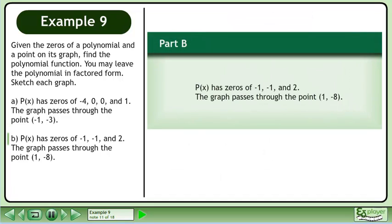Now we'll move on to part b. P(x) has zeros of -1, -1, and 2. The graph passes through the point (1, -8).